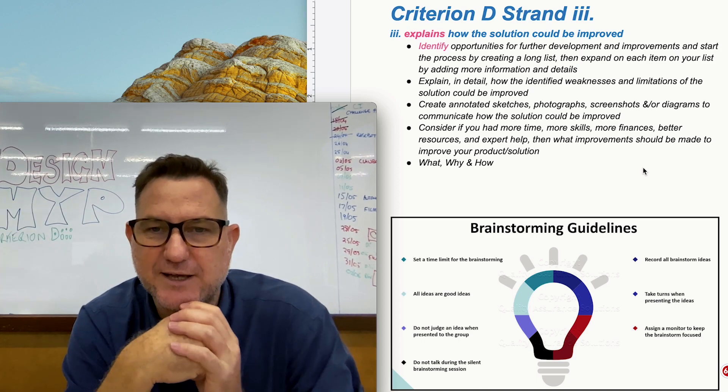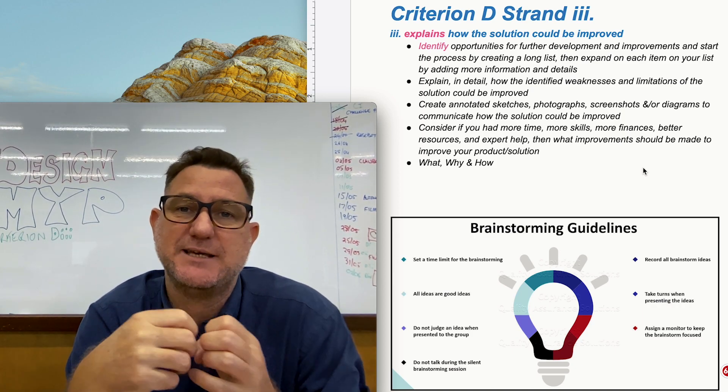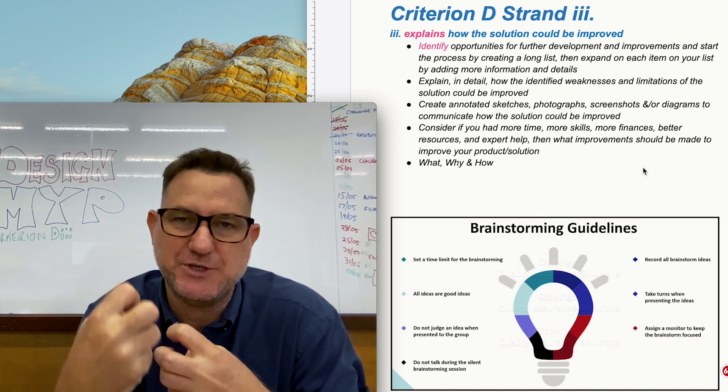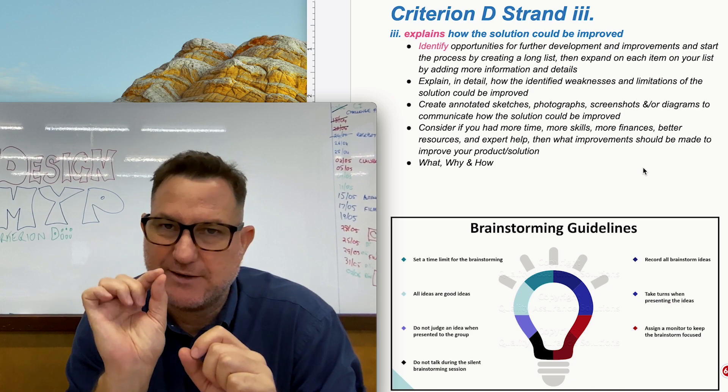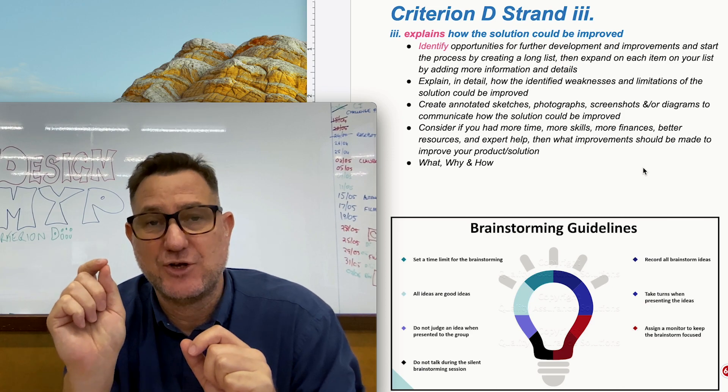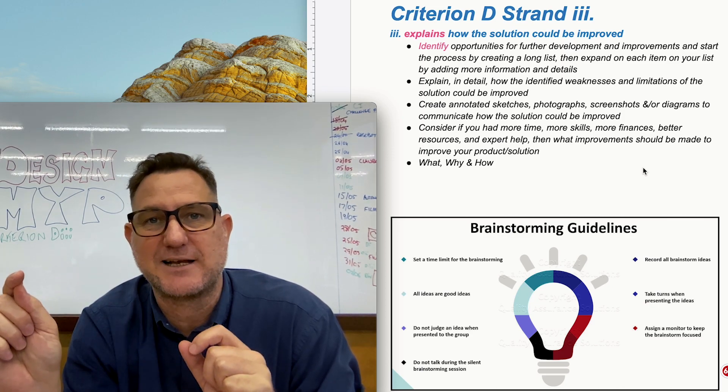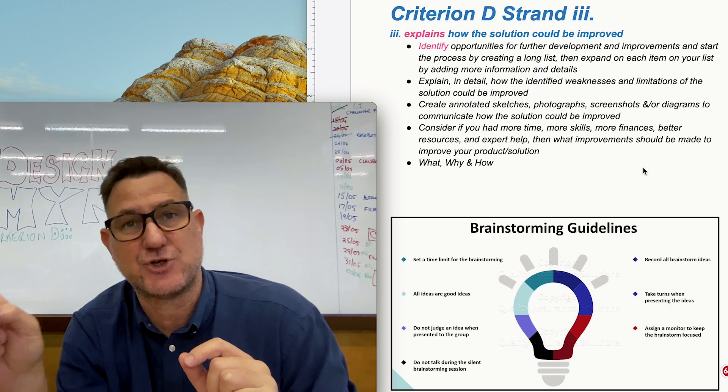Okay, next bullet point here it says about explaining in detail, so if you want to get top marks here you need words and images and details so whoever's marking your work they understand exactly which specific thing that you think should be changed and they can see exactly why it should be changed and actually how it should be changed.